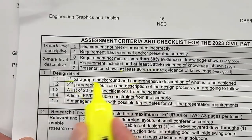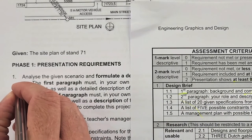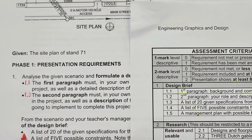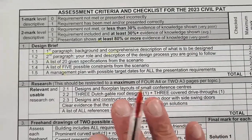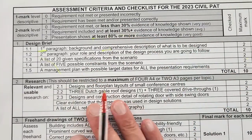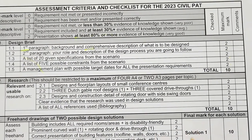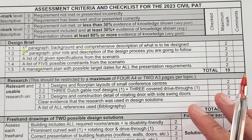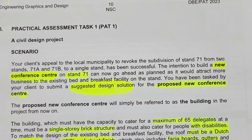You need to work both the checklist and the PAT document together as you proceed. For example, 1.1 is the first paragraph, 1.2 is the second, and 1.3 is your list of specifications — you can number these in your preparation. The critical hack is to not underestimate the importance of this document, because this is exactly how you will be assessed. Make sure you subscribe to How to EGD and watch the following episodes — they'll take you step by step to absolutely nail the PAT for this year's grade 12 civil project.